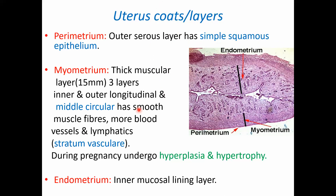The uterus has three layers. The perimetrium is the outer serous layer of simple squamous epithelium. The myometrium is a thick muscular layer of 15 mm with three layers: inner and outer longitudinal and a middle circular layer. It has smooth muscle fibers, more blood vessels and lymphatics — called stratum vasculare — and undergoes hyperplasia and hypertrophy during pregnancy. The endometrium is the inner mucosal lining layer.